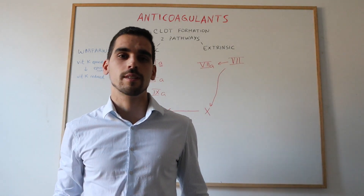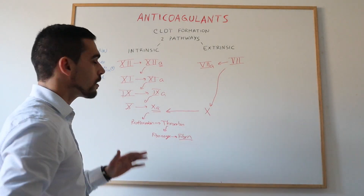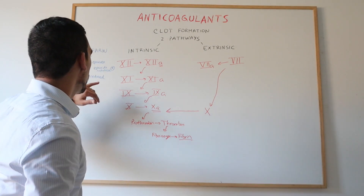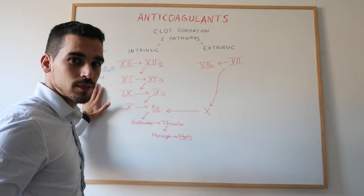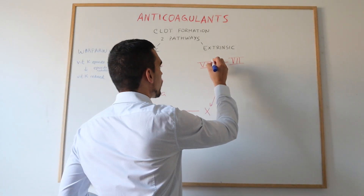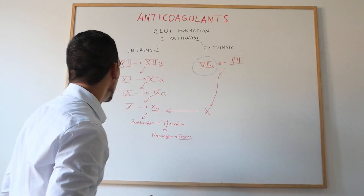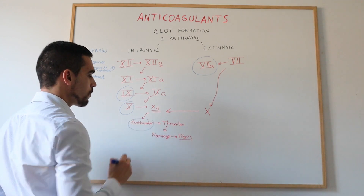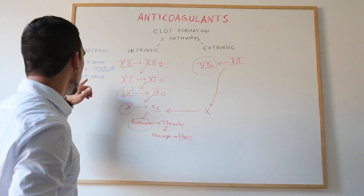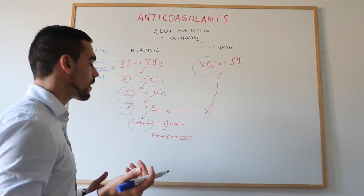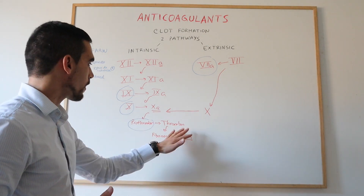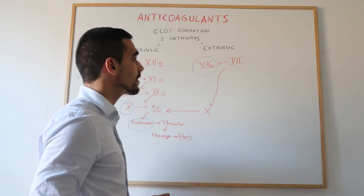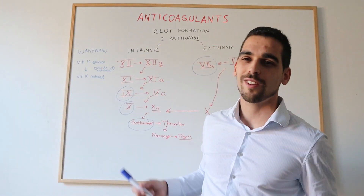Why is that important? In order for some clotting factors to get activated, they need to be carboxylated by vitamin K reduced. Specifically, Factors 7, 9, 10, and 2 (prothrombin) need vitamin K reduced to perform the carboxylation of their glutamic acid in order to get activated. Warfarin prevents this from happening, and that's how it achieves its anticoagulant effect.